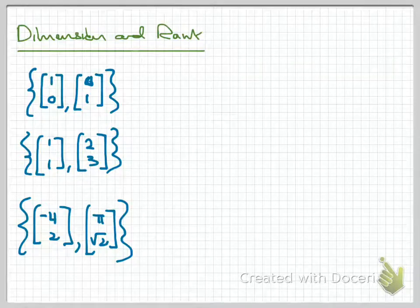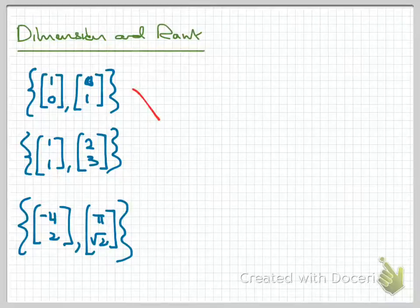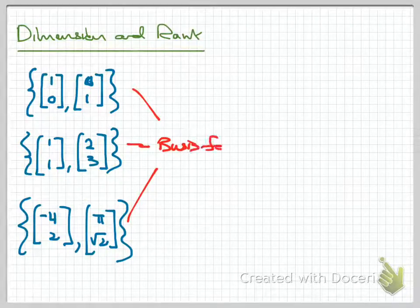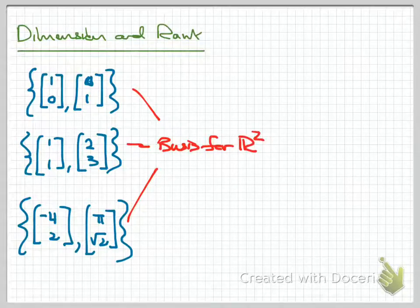Hi and welcome to this video on dimension and rank, two important terms connected with the idea of a basis. Looking at the screen, you see three sets of vectors in R2. Each of these sets is linearly independent and will span all of R2, which makes each of them a basis for R2. They look very different, but each one is a basis because each set is linearly independent and spans all of R2.